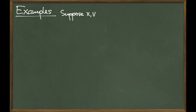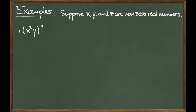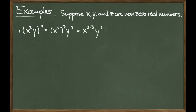Now we're ready to take a look at a few examples. Let x, y, and z all be non-zero real numbers. First, consider the quantity x squared times y raised to the power of 3. We're dealing with a power of a product rule, so we can apply the power of 3 to each term inside the parentheses. This gives us x squared raised to the power of 3 times y raised to the power of 3. Using the power to a power rule, we write x squared to the 3 as x to the 2 times 3, which gives us x to the sixth times y to the third.